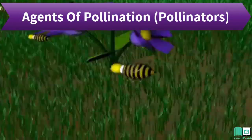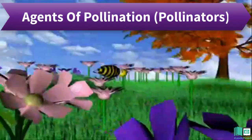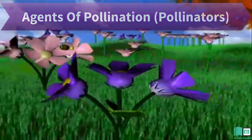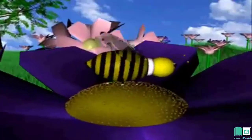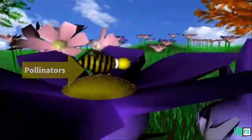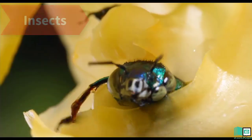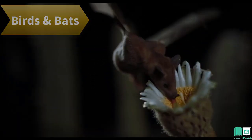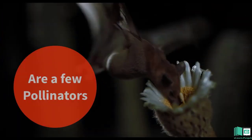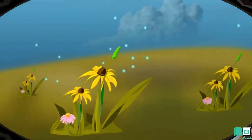Agents of Pollination — Pollinators: The agents that carry pollen grains from the anthers of flowers to the stigmas are called pollinators. Wind, water, insects, birds, and bats, etc. are a few pollinators.